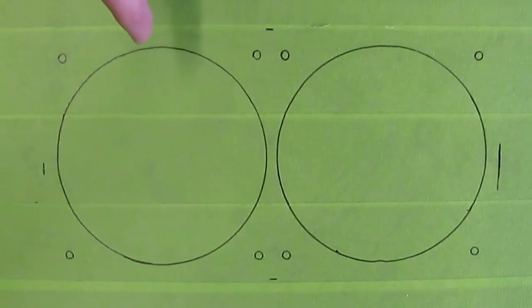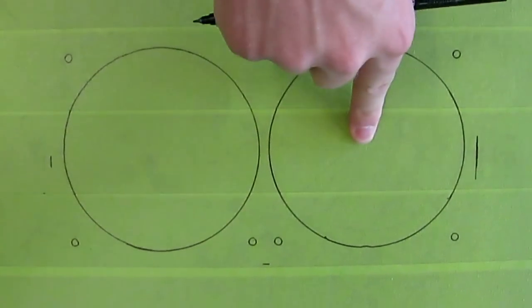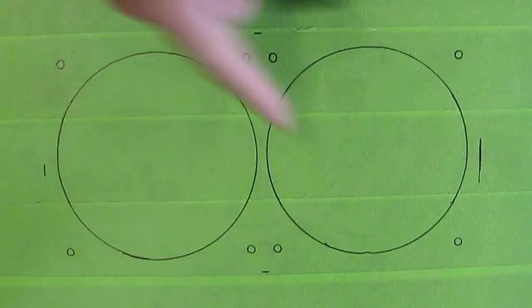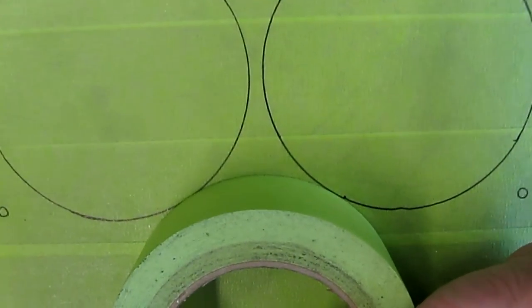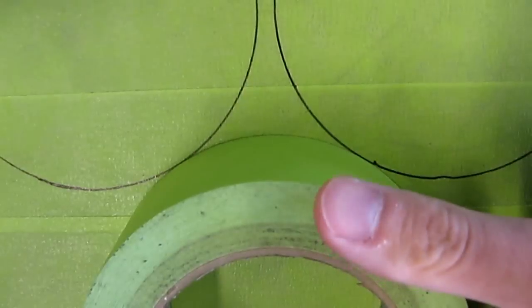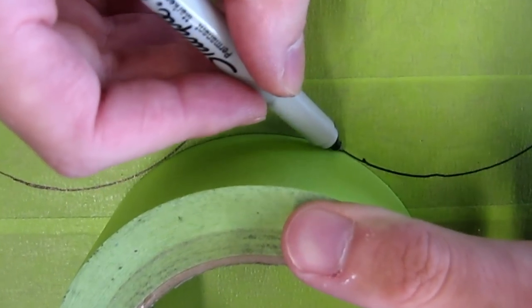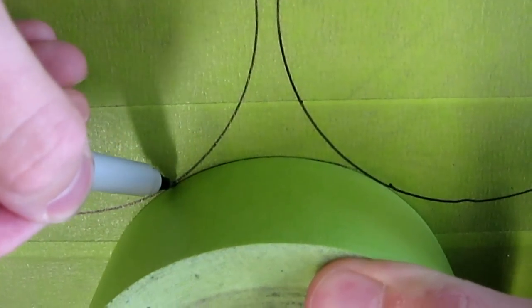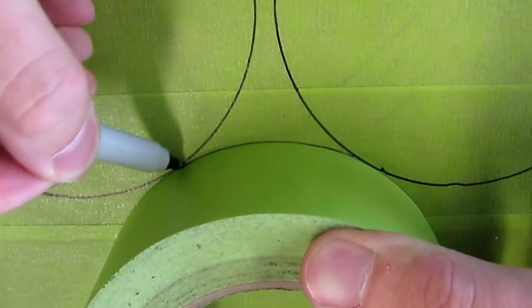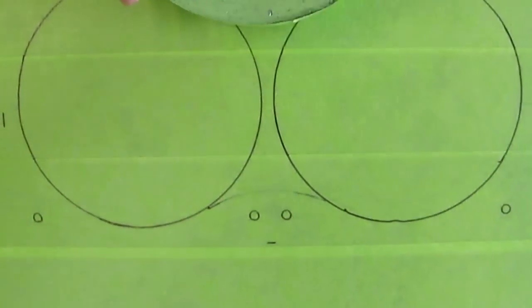So since we're using a jigsaw today we don't want to have to cut two individual holes so instead we're going to make this into one large hole. So what you can do is take your roll of tape and line it up on either side and then mark off from either side along this tape so that when you're done you'll have one nice big hole for a lot of airflow.